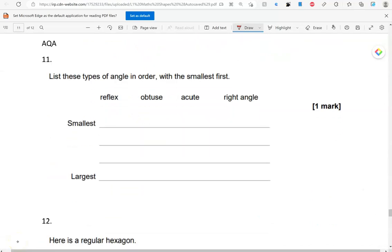List these types of angle in order with the smallest first. So, again, a reflex angle looks like so. So, it's greater than 180 degrees. Obtuse is greater than 90, but less than 180. Acute, that is less than 90. Right angle looks like this. So, the smallest would be acute. Then right angle, then obtuse, and reflex.